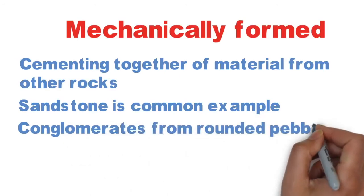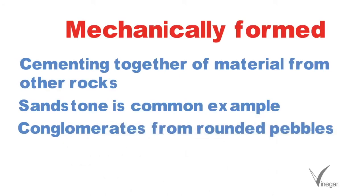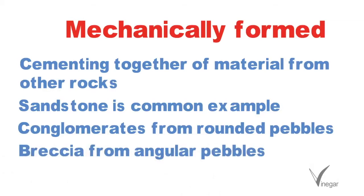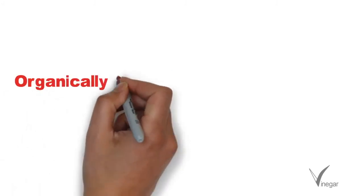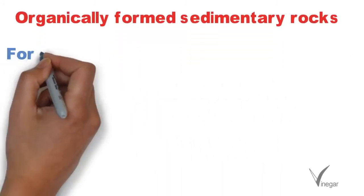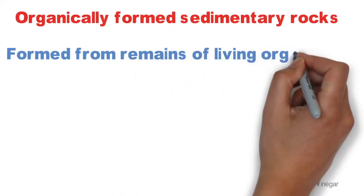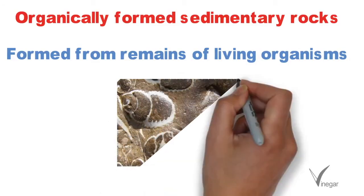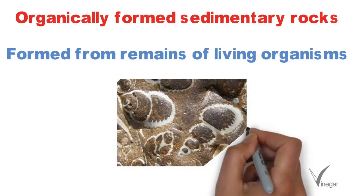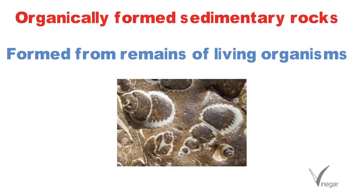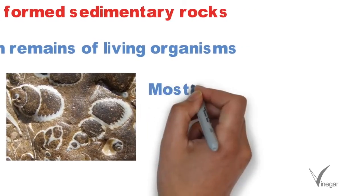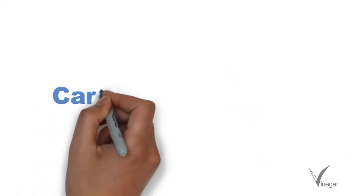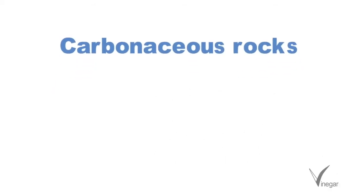Sedimentary rocks are also formed by cementing together of larger sized pebbles. If such pebbles are rounded, the sedimentary rocks formed are called conglomerates. If the pebbles are angular, the sedimentary rocks formed are known as breccia. Organically formed sedimentary rocks are formed from the remains of living organisms like corals and shellfish. The fleshy parts decompose and only the hard shells remain, from which sedimentary rocks are formed. These are mostly of calcareous type, with examples being limestone and chalk.